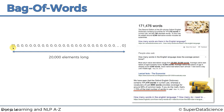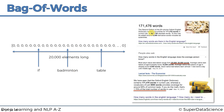So our vocabulary — all possible words we can encounter — fits into a vector of 20,000 elements. What we're saying is that every word in the English language has a fixed position somewhere in this vector. For example, the word 'if' might be at position 7, and it's always going to be at that position. The word 'badminton' could be at another fixed position, and 'table' at yet another. That's how the bag of words model works.